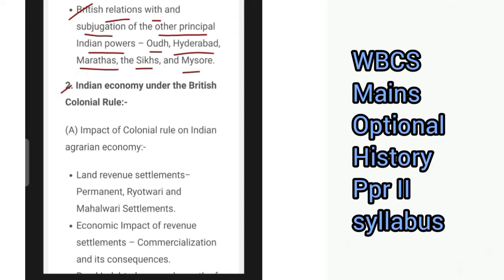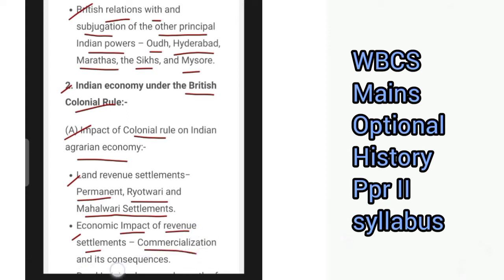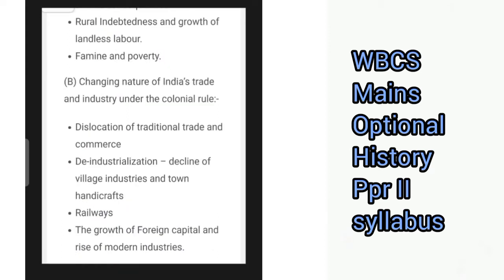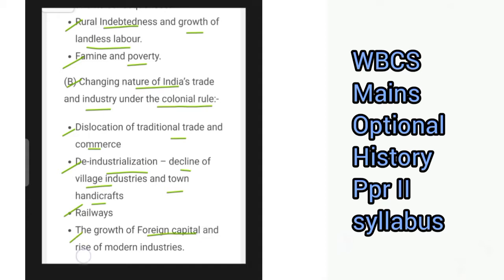Then we have Indian economy under the British colonial rule, covering the impact of colonial rule on Indian agrarian economy, land revenue settlements — Permanent, Ryotwari and Mahalwari settlements — and the economic impact of revenue settlements, commercialization and its consequences, rural indebtedness and growth of landless labour, famine and poverty. Also covered is the changing nature of India's trade and industry under colonial rule: dislocation of traditional trade and commerce, de-industrialization, decline of village industries and town handicrafts, railways, growth of foreign capital and rise of modern industries.